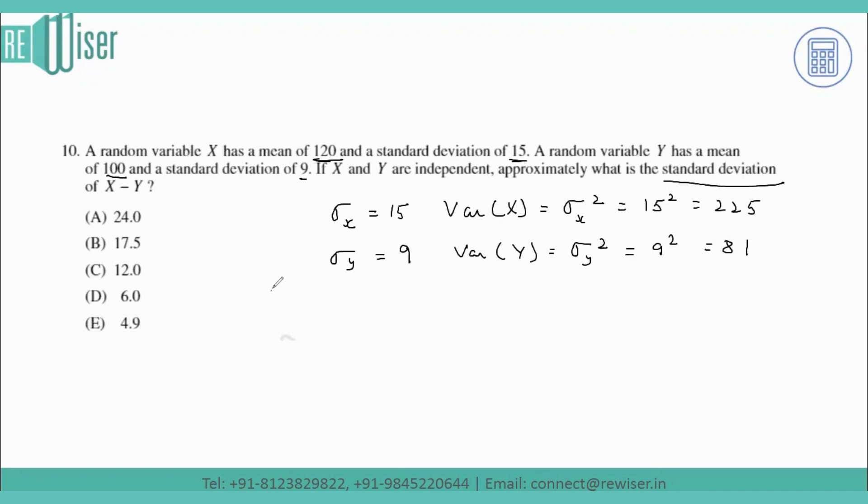Now, when a variance is multiplied with a constant or scalar a, the square of the scalar gets multiplied with the original variance.